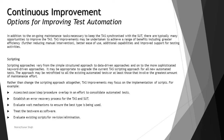We may look forward to creating or refactoring our scripts. For example: assess test cases and step procedures for overlap in an effort to consolidate automated tests; establish an error recovery process for the test and SUT; evaluate wait mechanisms to ensure the best type is being used; treat the test ware as software; and evaluate existing scripts for revision and elimination. These points help you understand the different parameters to look for and the factors which influence the customization of scripts over time.